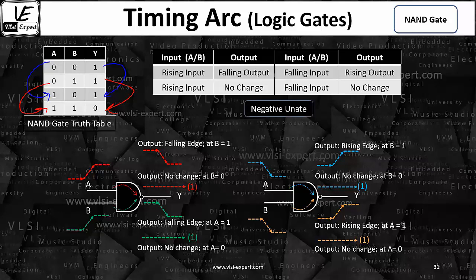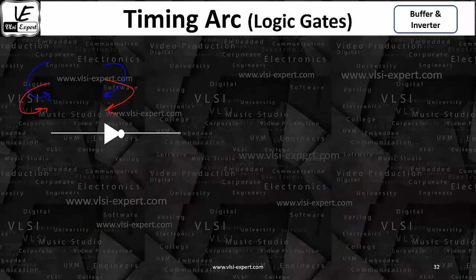So it is negatively following. That behavior, that property, we call a negative unit. By now you should be clear about what is a negative unit and what is a positive unit.